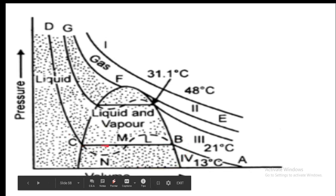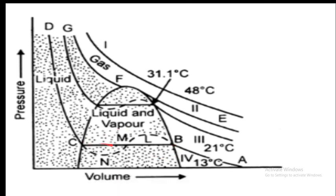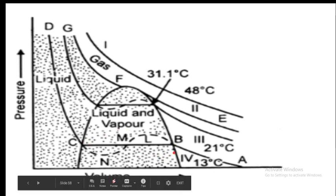Between B and C, the gas and liquid co-exist. The co-existence of liquid and gas is represented by the horizontal portion, where pressure remains constant.